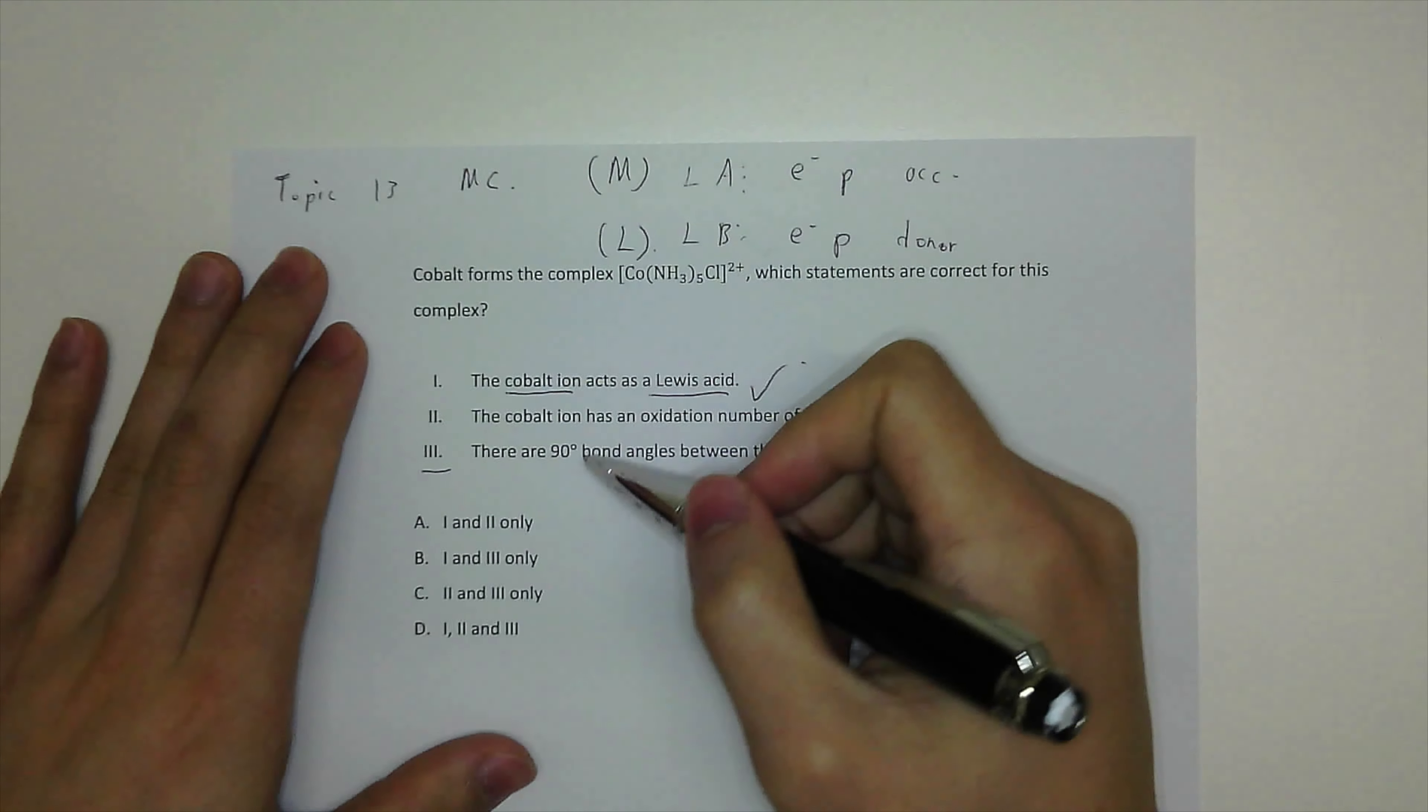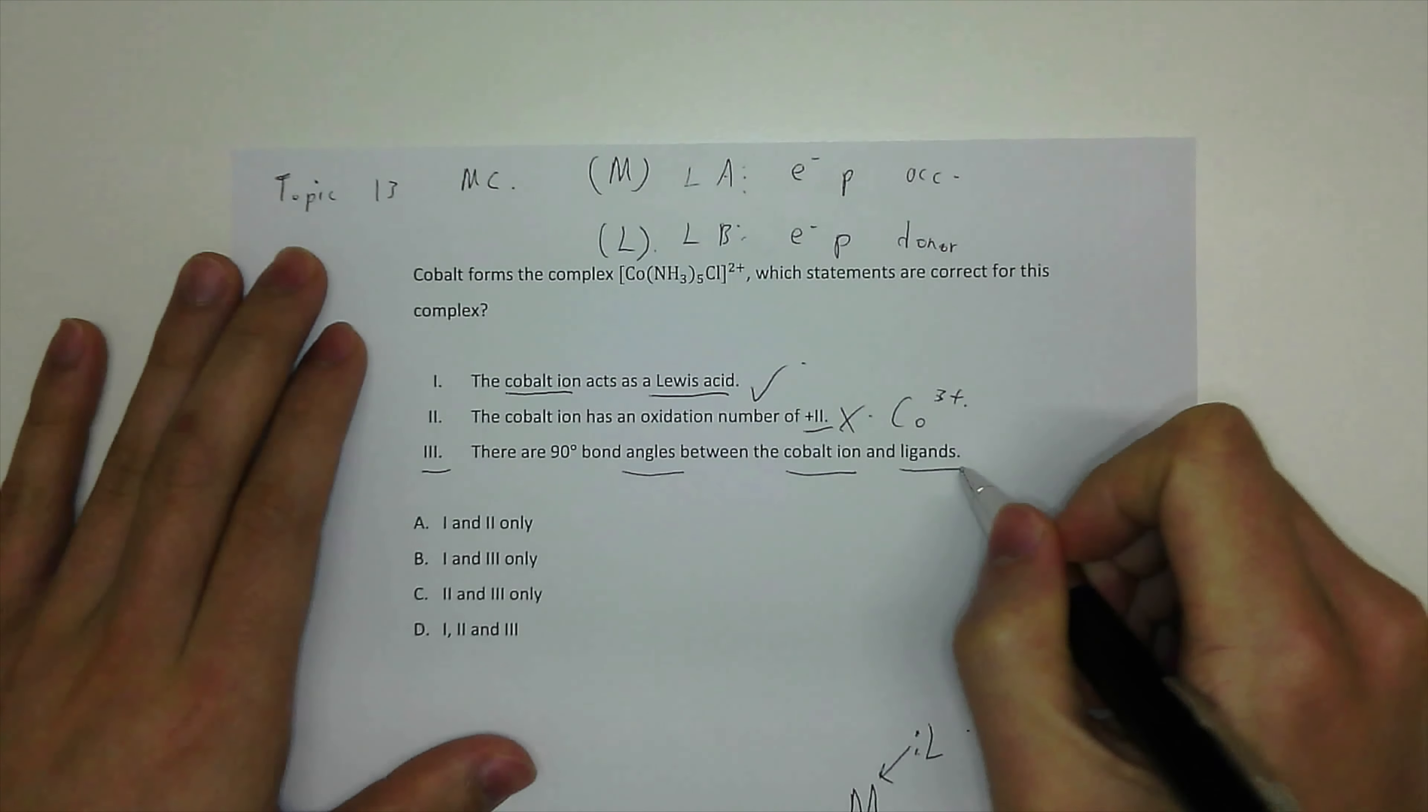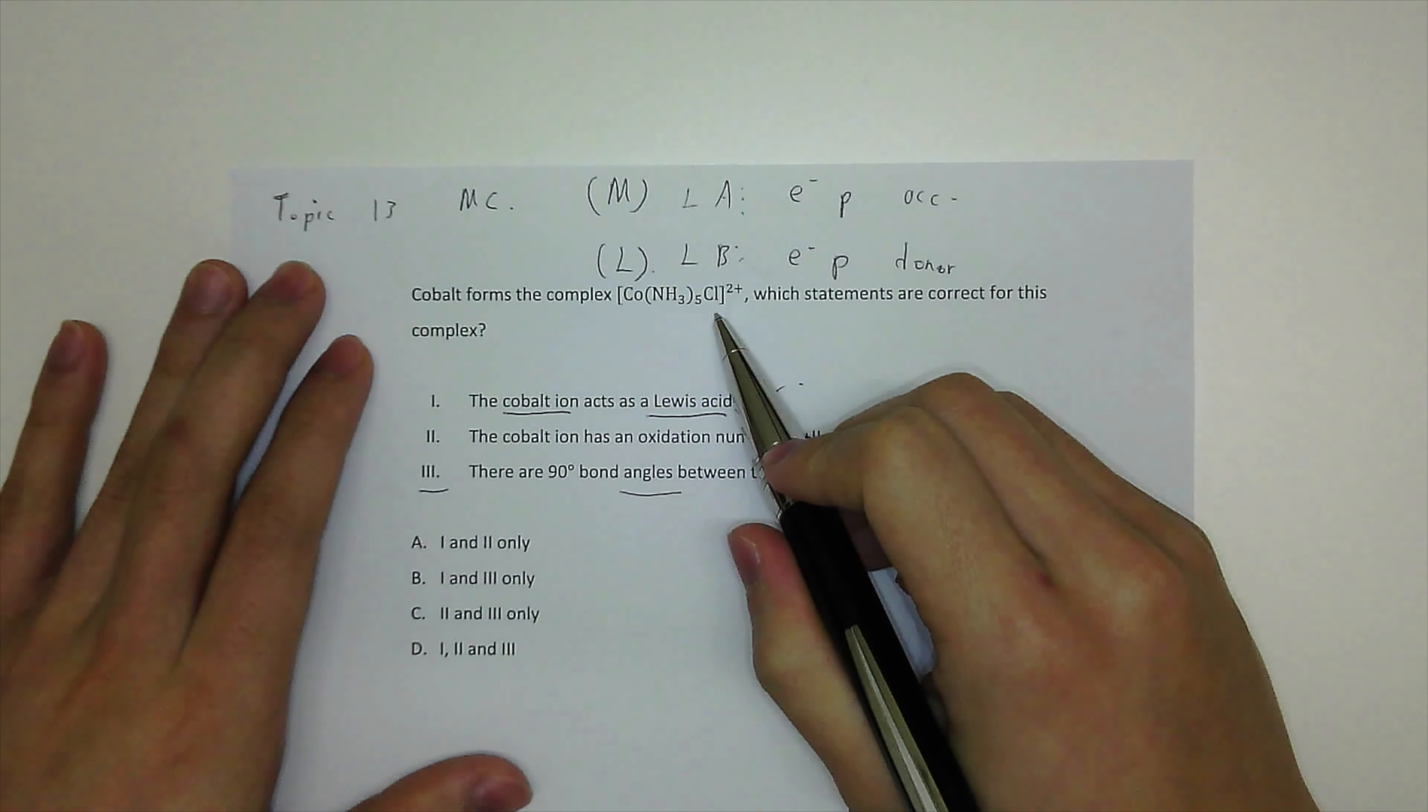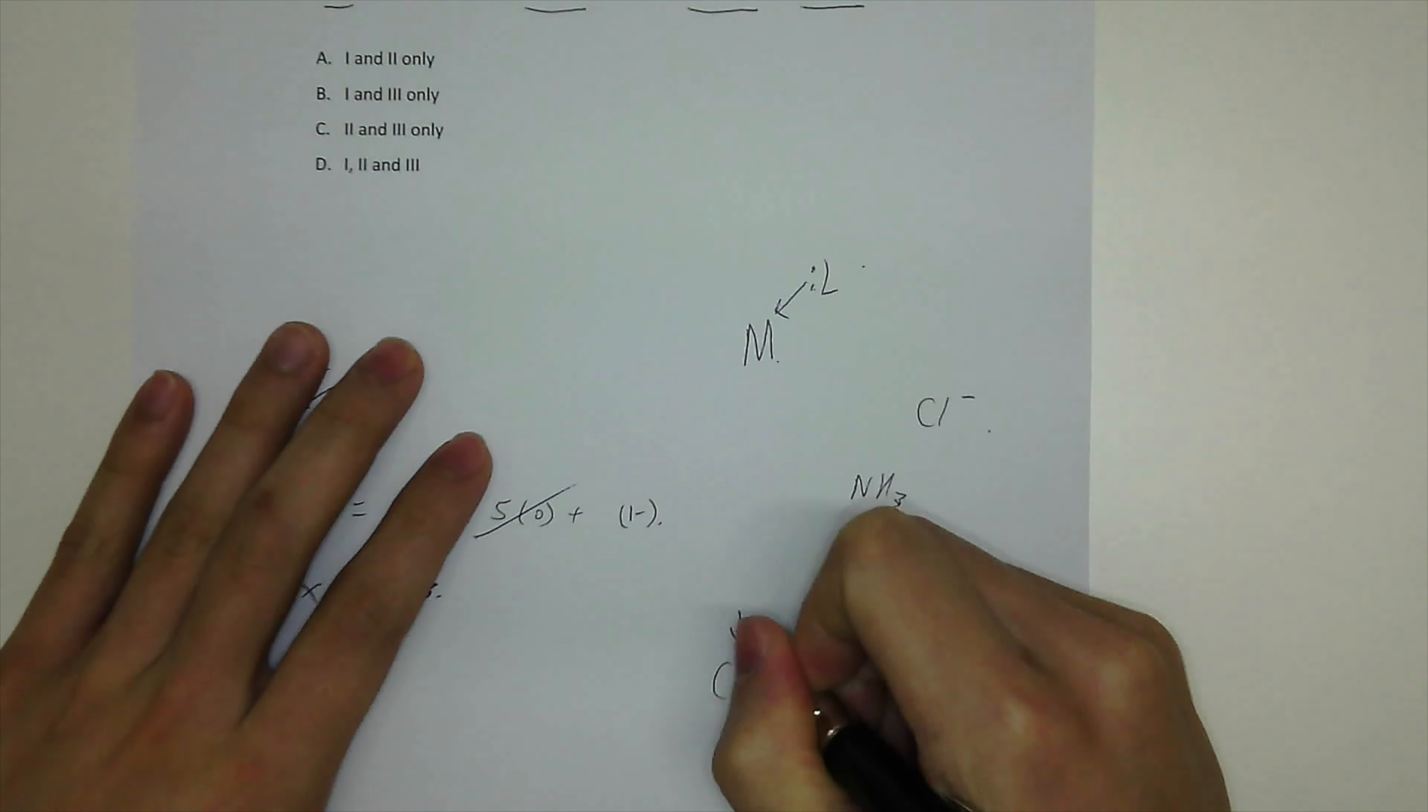The last one, there are 90 degree bond angles between the cobalt ion and the ligands. So that has a ligand complex ion. Six ligands with one metal ion, so the shape is octahedral.